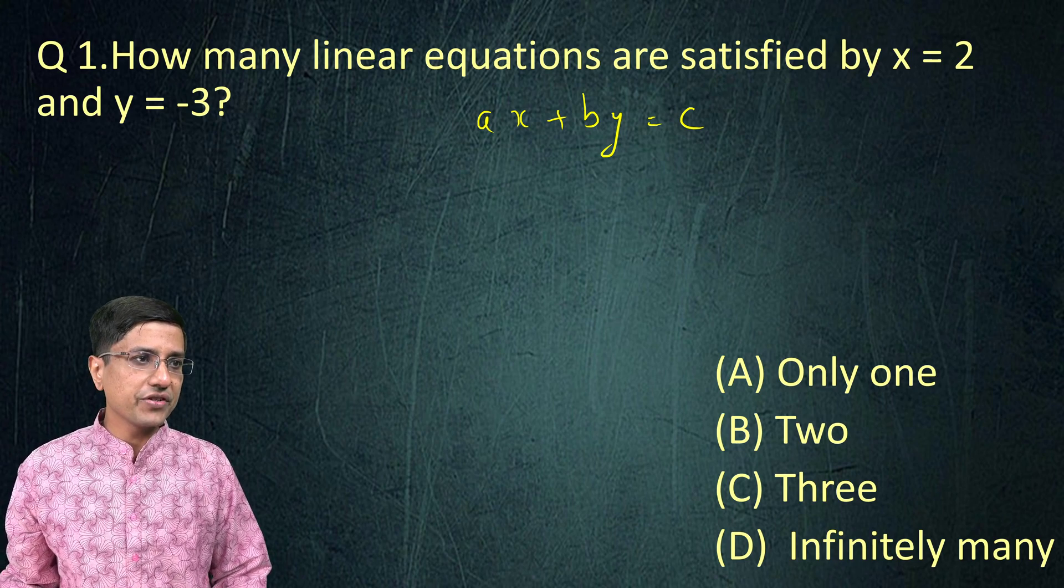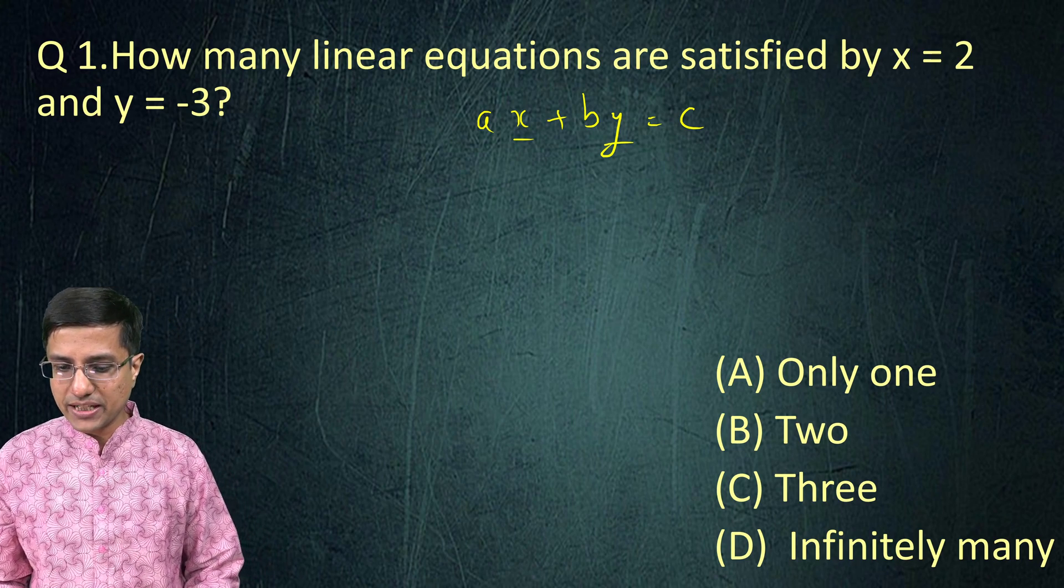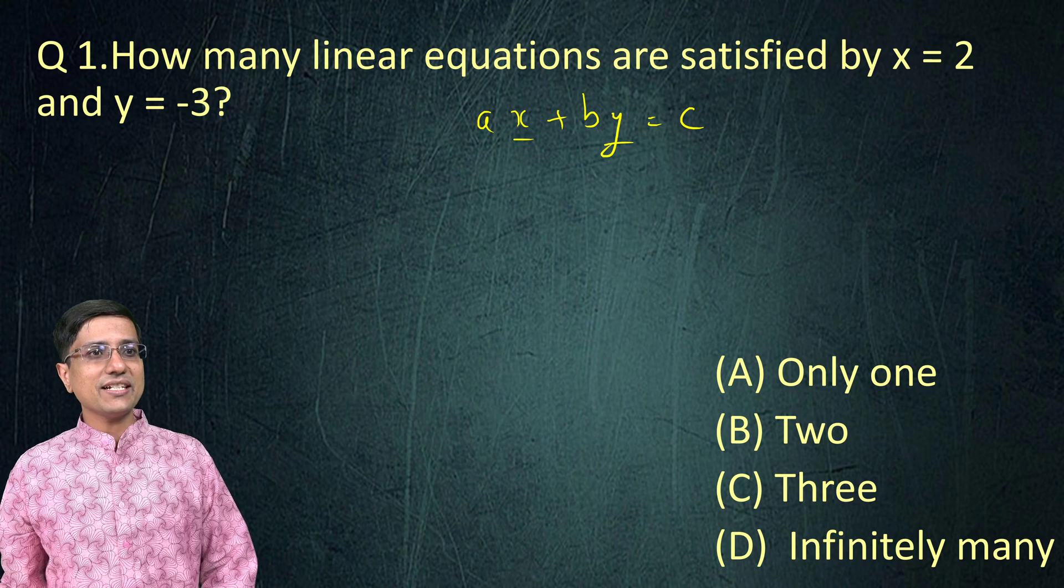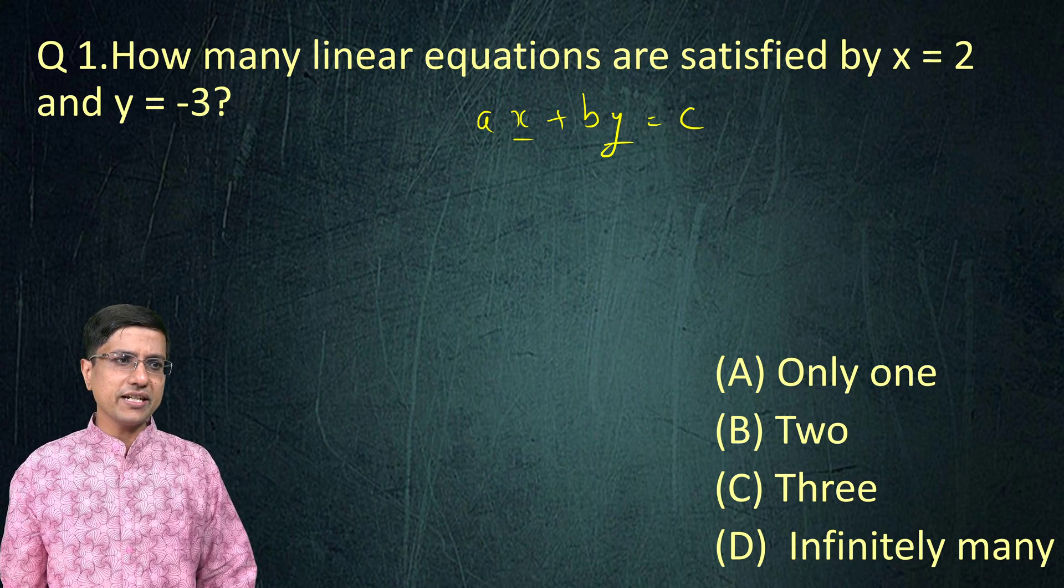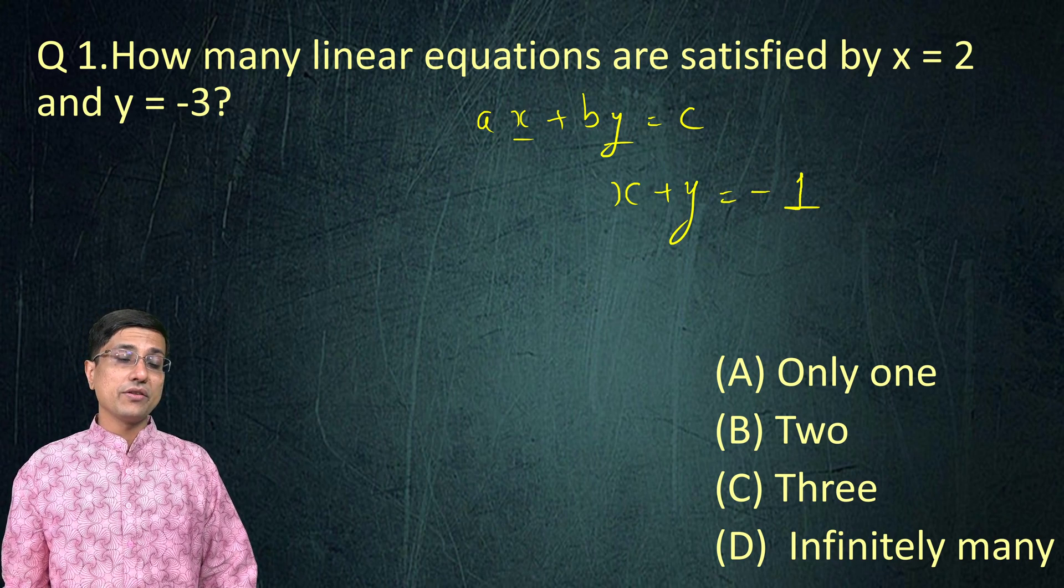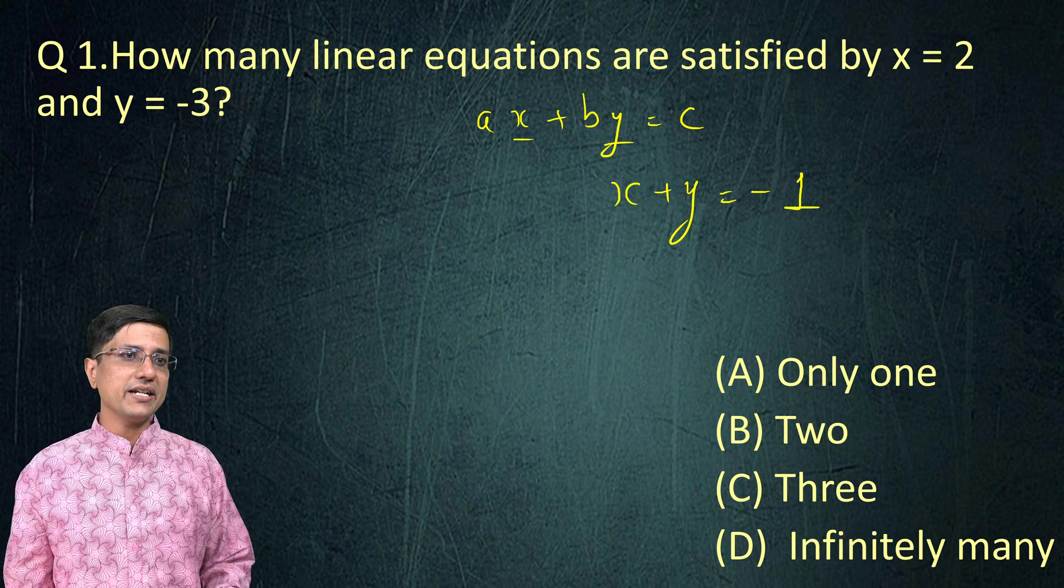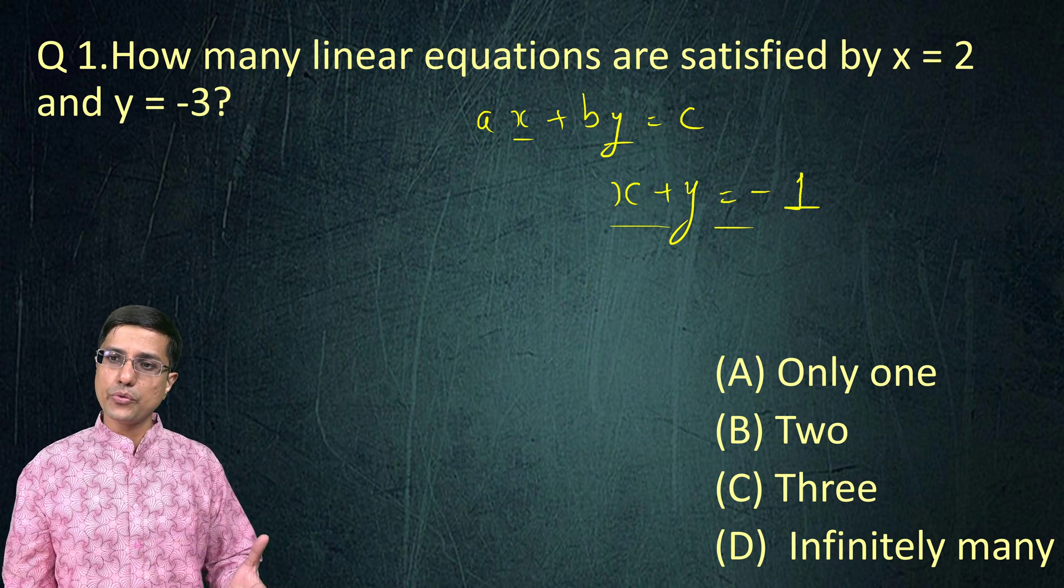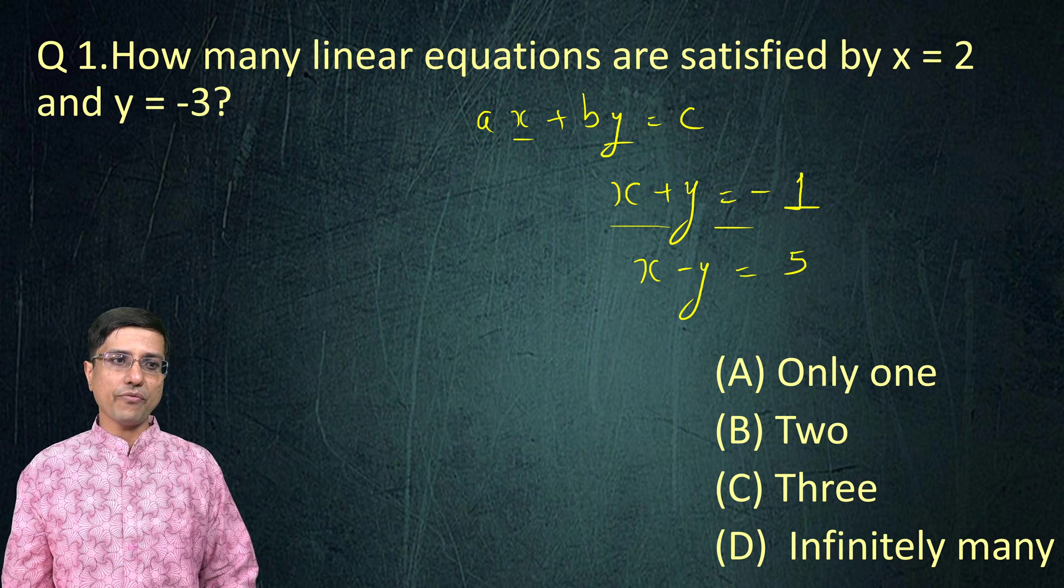This is an example of a linear equation. It means that all the powers of x and y - the maximum power is 1. We have to find the linear equations which are satisfied by x = 2 and y = -3. So there is one such linear equation I can assume could be x + y = -1. There are others as well. So there are a number of such equations which can be satisfied with these two values. If I plug x = 2 and y = -3, indeed this equation becomes true. Another example could be x - y = 5.